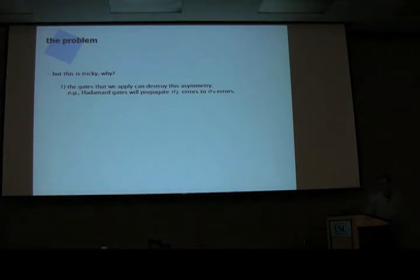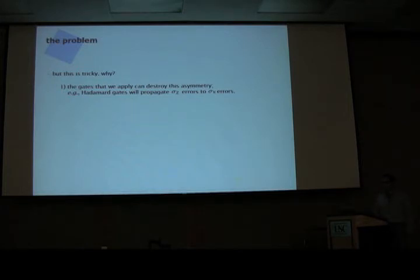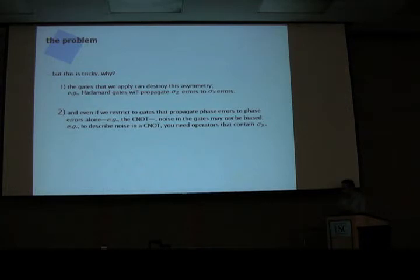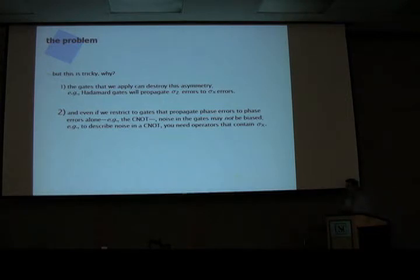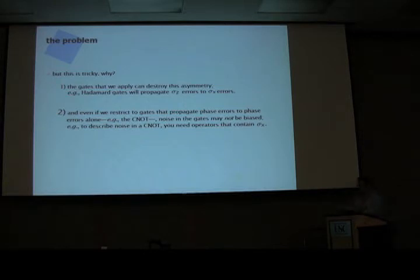This is a tricky question, as John Preskill also mentioned. It's tricky because first you must avoid gates that propagate Z-errors to X-errors. But there's another issue: even if all your gates are designed so that phase flips only propagate as phase flips, to describe noise in a CNOT gate you may need a component that is non-diagonal — something like sigma-X. If you want to describe noise in a CNOT, you have to describe it by a flip on the second bit.